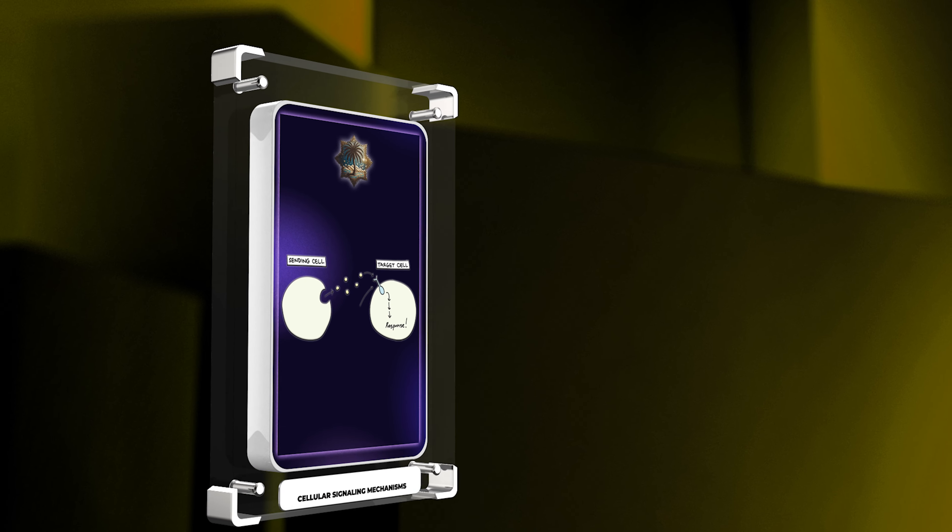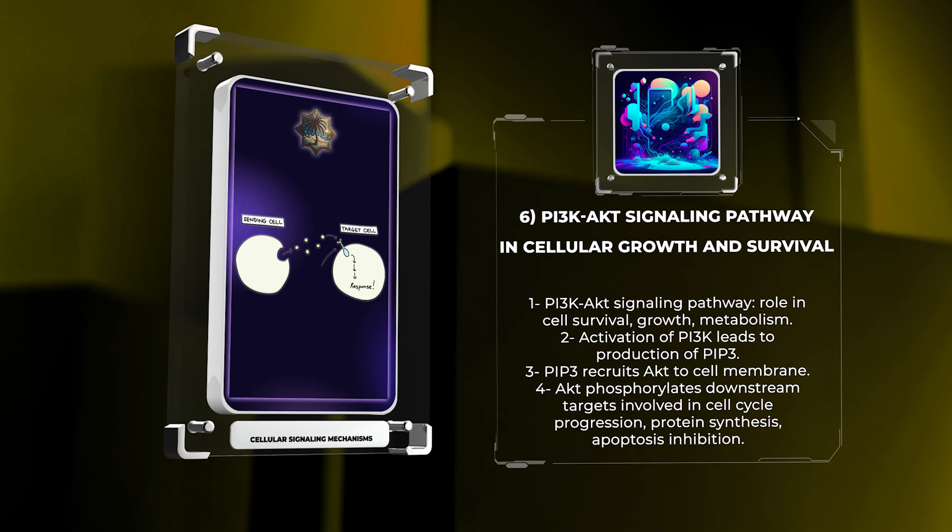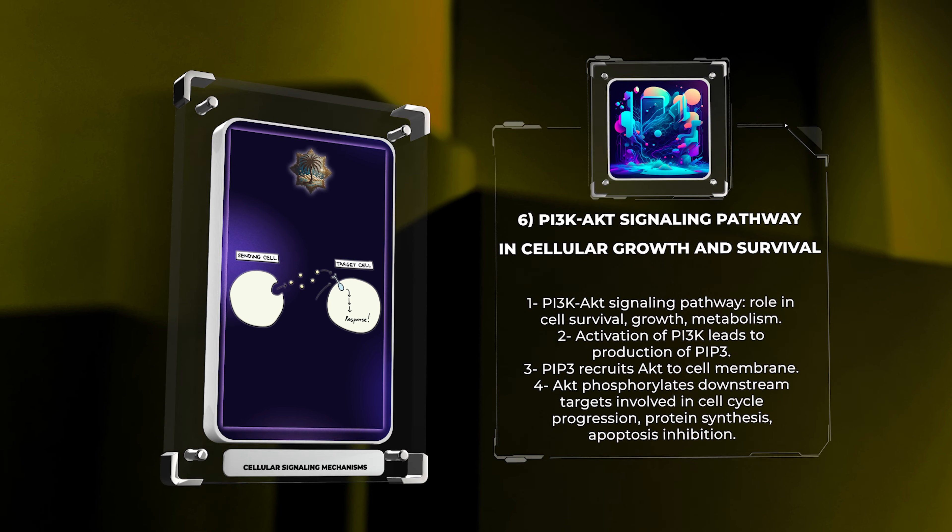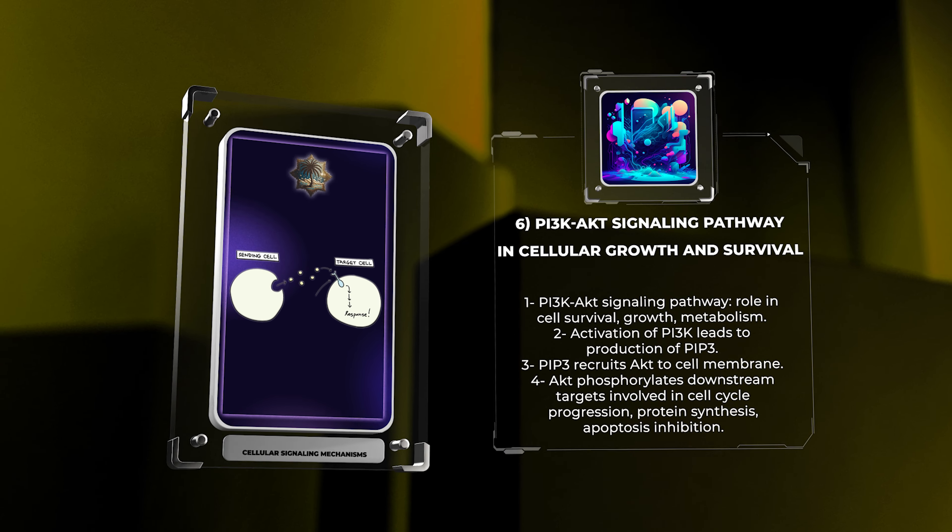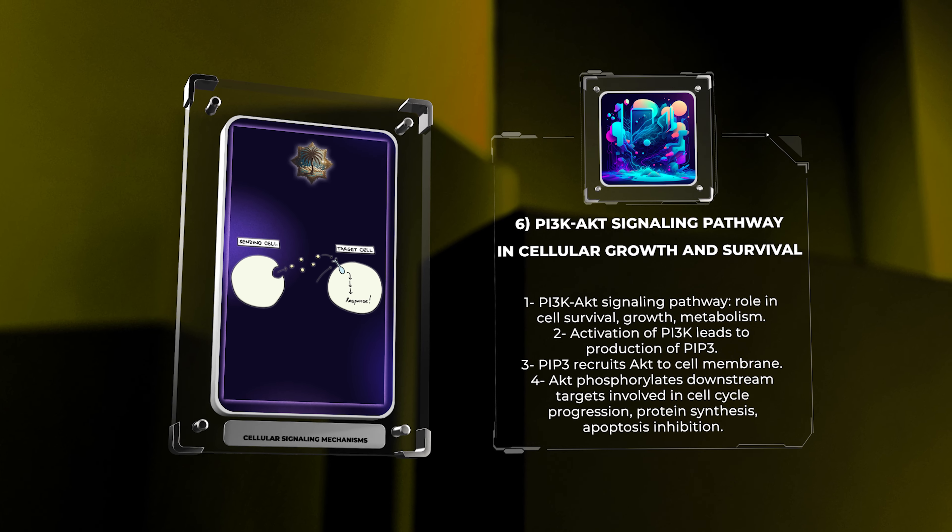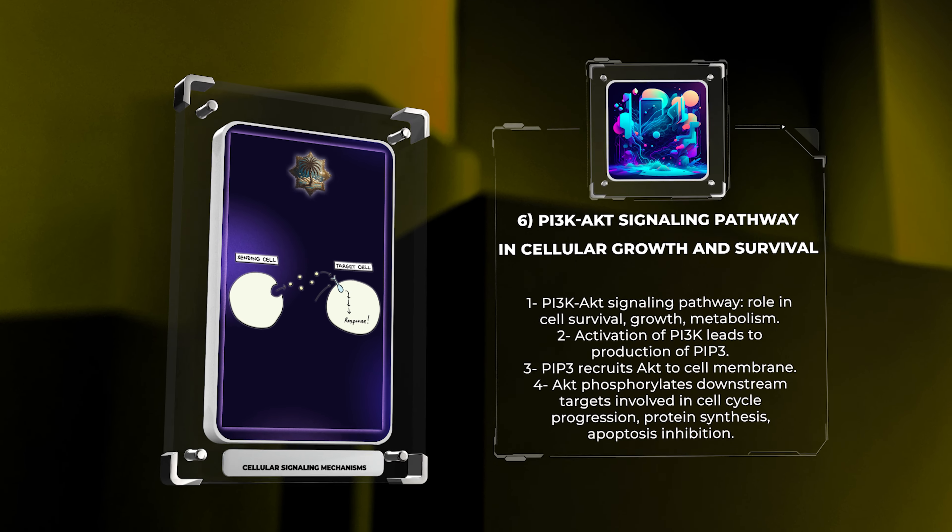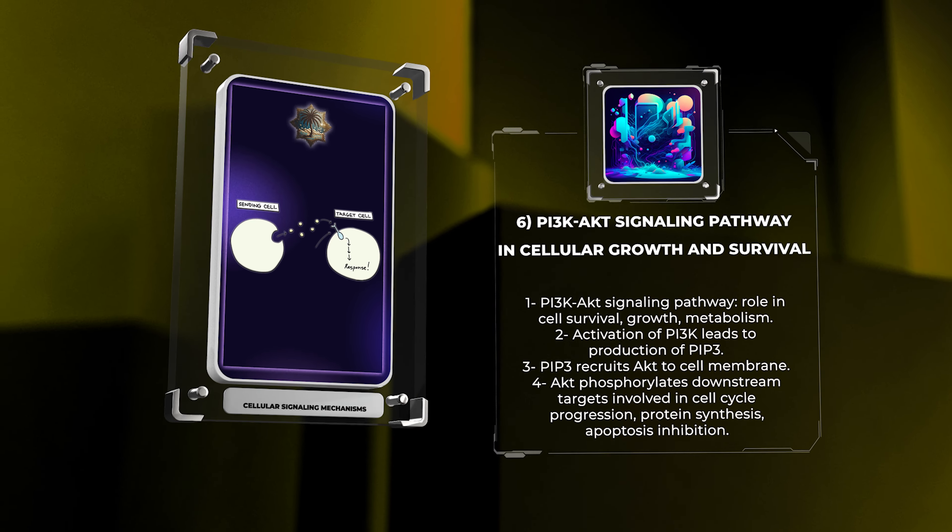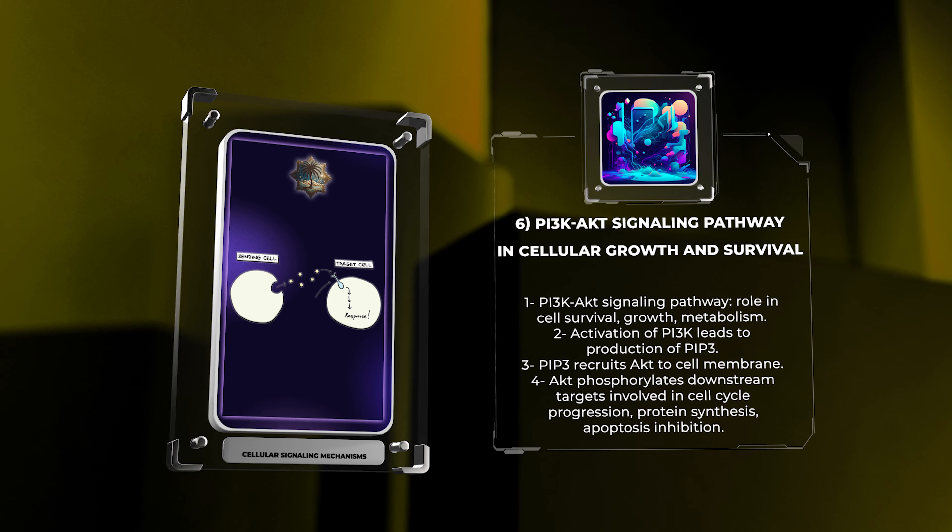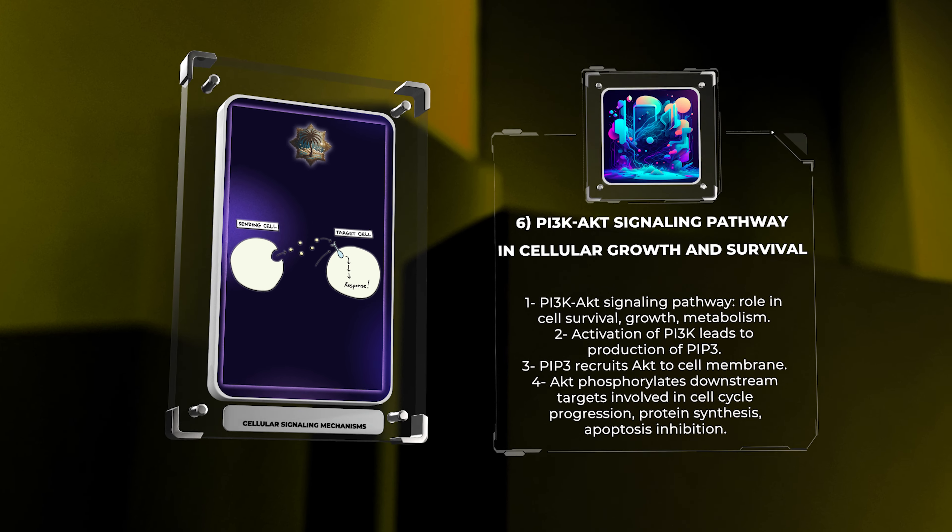The phosphoinositide-3-kinase (PI3K-AKT) signaling pathway plays a crucial role in cell survival, growth, and metabolism. Activation of PI3K leads to the production of phosphatidylinositol-3,4,5-triphosphate (PIP3), which recruits AKT to the cell membrane. AKT, in turn, phosphorylates numerous downstream targets involved in cell cycle progression, protein synthesis, and apoptosis inhibition. Dysregulation of this pathway is frequently observed in cancer and other diseases.